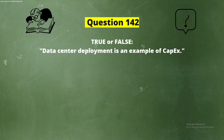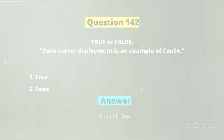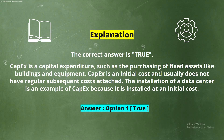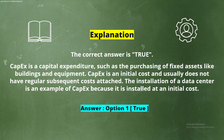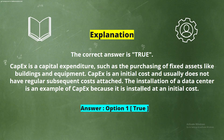Question 142. True or False: Data Center Deployment is an example of CapEx. Options: Option 1, True; Option 2, False. The correct answer is Option 1, True. CapEx is a capital expenditure such as the purchasing of fixed assets like buildings and equipment. CapEx is an initial cost and usually does not have regular subsequent costs. The installation of a data center is an example of CapEx because it is installed at an initial cost.